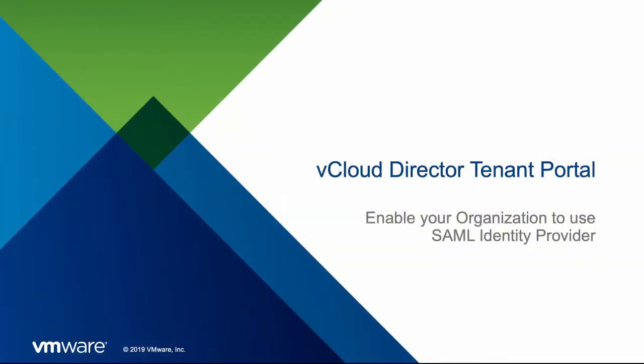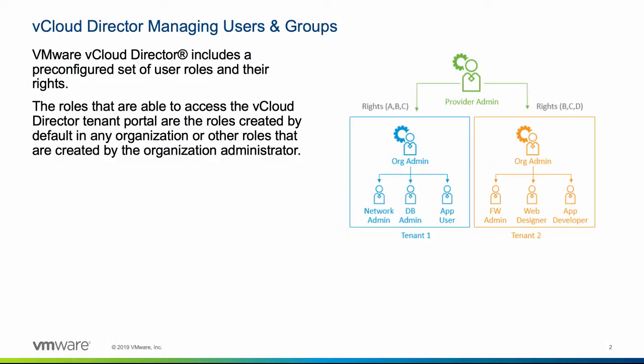Welcome to this demonstration of how the service provider's customers can use the HTML5-based VMware vCloud Director tenant portal to integrate their organization with a Security Assertion Markup Language or SAML-based identity provider. In our case, we use the VMware Identity Manager as an identity provider. However, any other third-party identity provider capable of SAML 2 or OAuth can be used within vCloud Director as well. This video focuses on the usage of a SAML-based integrated identity provider. The enablement of your organization to use local or LDAP-based users and groups will be shown in another video.